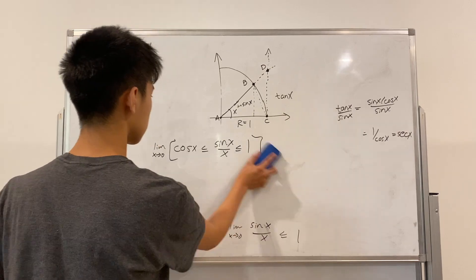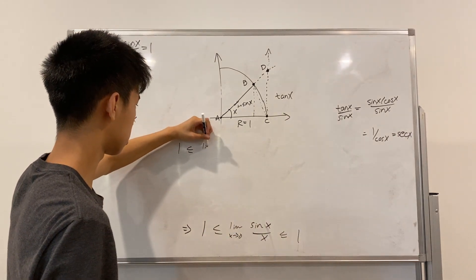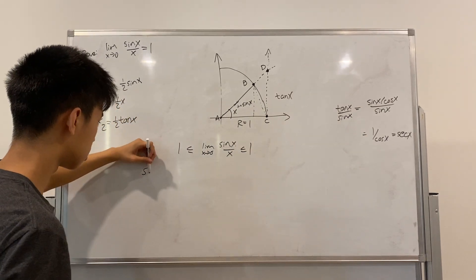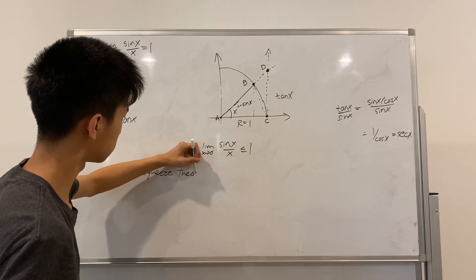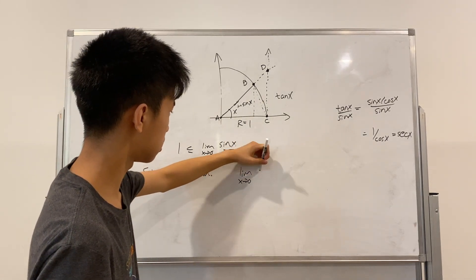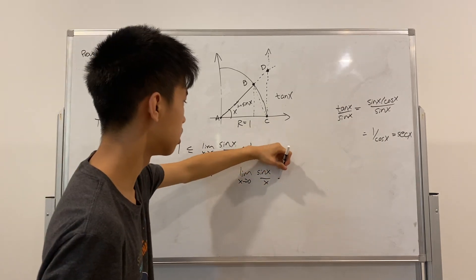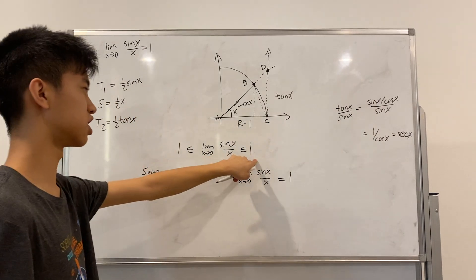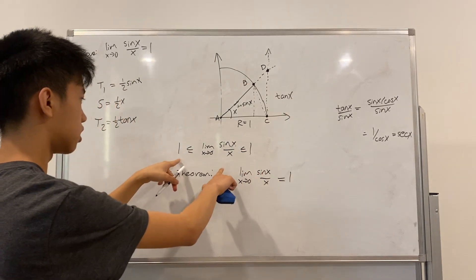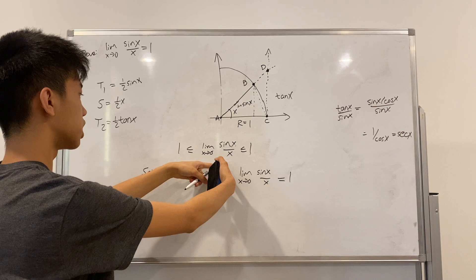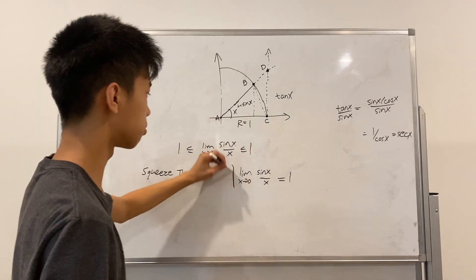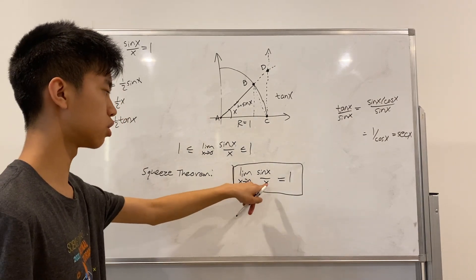So, the limit of X approaching zero of sine of X over X is in between one and one. So, using squeeze theorem, we can say that the limit as X approaches zero of sine of X over X also must equal one. And, if we just take a look at this, it seems kind of obvious that if we have one and one here and it's in between one, the only logical place that there is for sine of X over X is one. But, squeeze theorem just kind of verifies this for us. And, therefore, we have proved that the limit as X approaches zero of sine of X over X is equal to one.